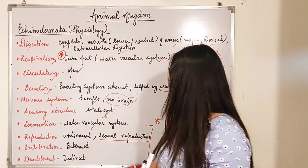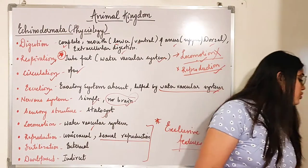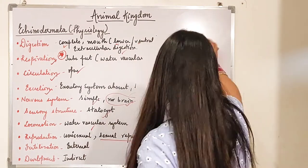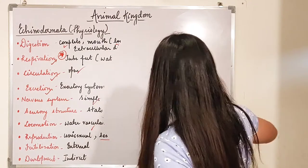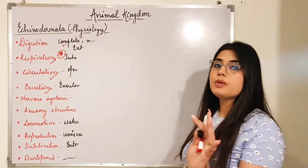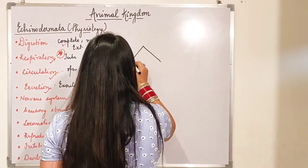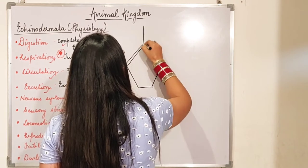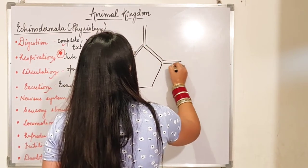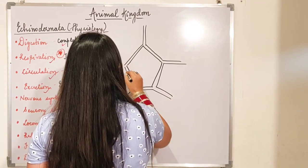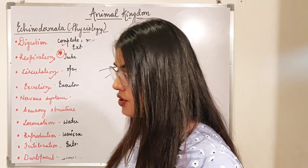Now I will erase these points and draw a diagram of the water vascular system. You can draw it alongside me for practice. Let's get started — it is very simple. First of all we need to draw a hexagon shape.